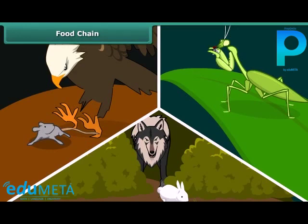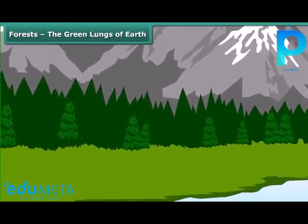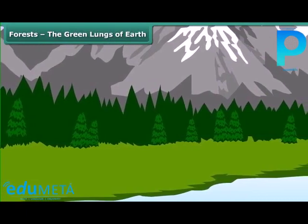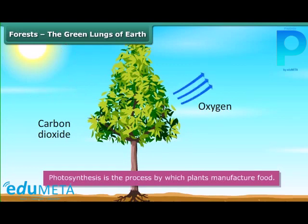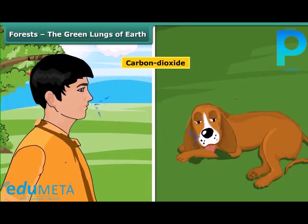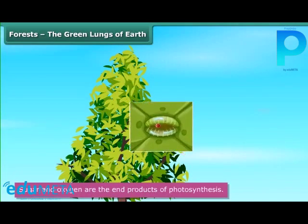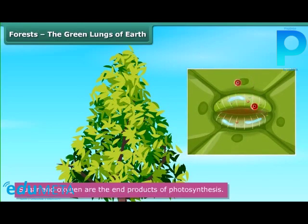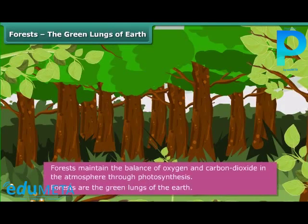Forests support many such food chains, which are interlinked to one another to form a food web. Forests maintain the balance of oxygen and carbon dioxide in the atmosphere through photosynthesis. Photosynthesis is the process by which plants manufacture food — plant leaves use light from the sun to synthesize food from carbon dioxide and water. Sugar and oxygen are the end products of photosynthesis. Sugar is transported to the rest of the plant, while oxygen is released into the air and used by human beings and animals in respiration. That is why forests are called the green lungs of the earth.